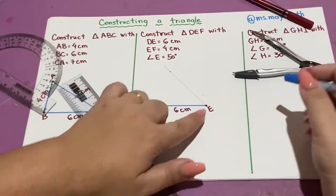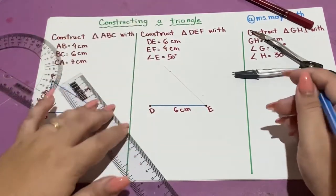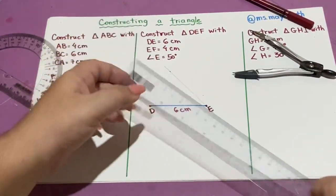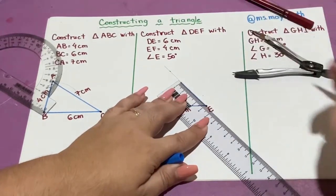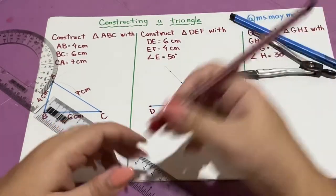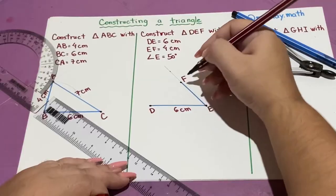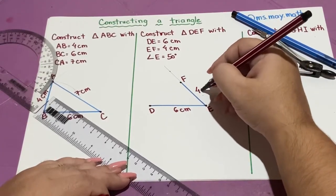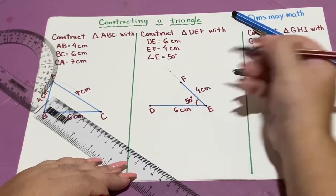And this will be the side, can be EF, 4 centimeters. Let's measure 4 centimeters. This one will be my point F, and this side is 4 centimeters. This is the angle of 50 degrees.